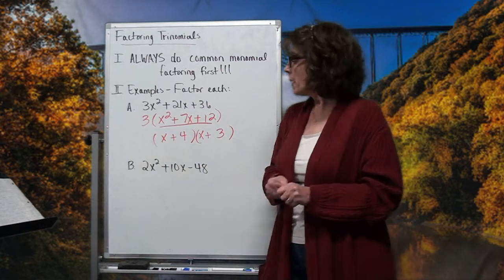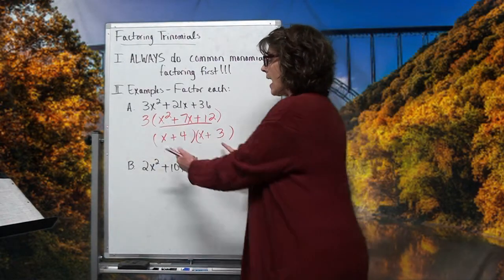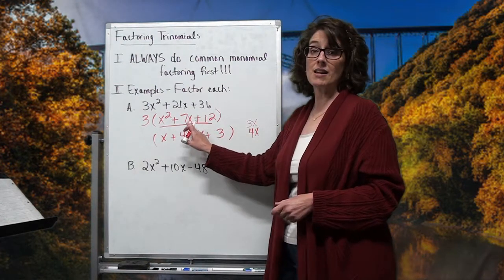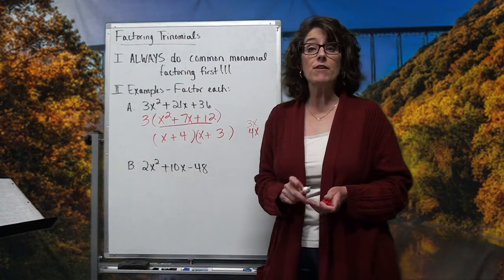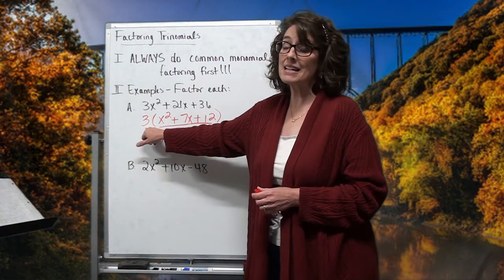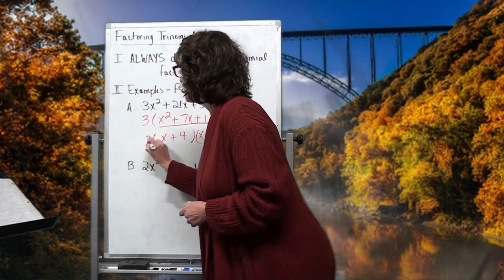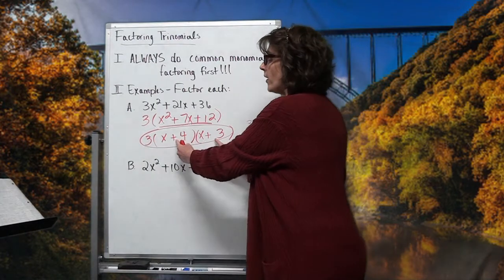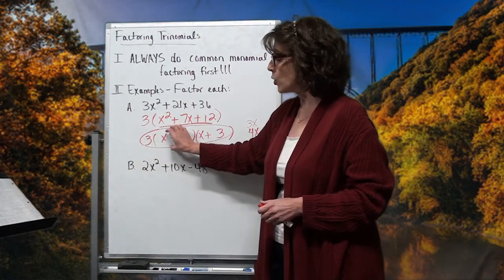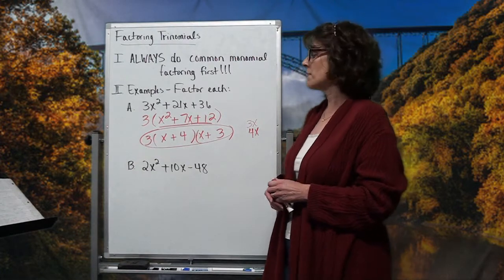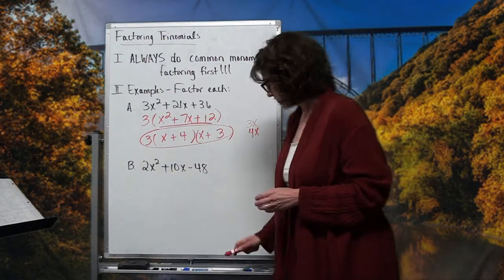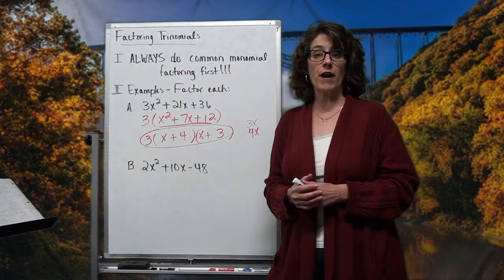I can check this by FOIL: x times x is x squared; out here I get 3x; in here I get 4x; combining 3x and 4x gives that 7x in the middle; and 4 times 3 is 12. But I have to get all the way back to the beginning — that 3 I divided out can't disappear. When I FOIL and distribute the 3, I get back to the beginning. So the factored form is 3 times (x + 4) times (x + 3). Always do that common monomial factoring before anything else.